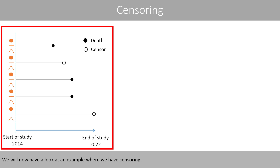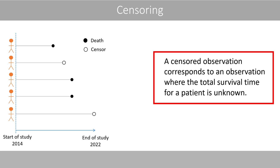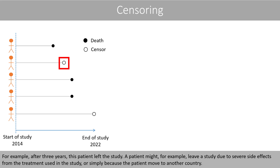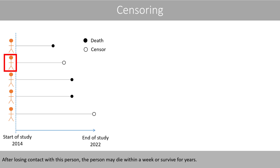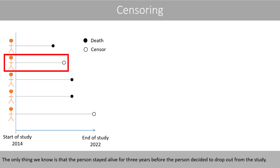We will now have a look at an example where we have censoring. A censored observation corresponds to an observation where the total survival time for a patient is unknown. For example, after three years, this patient left the study. A patient might leave a study due to severe side effects from the treatment, or simply because the patient moved to another country — we will therefore never know how long this patient will survive, because we have for some reason lost contact with the patient. After losing contact, the person may die within a week or survive for years.